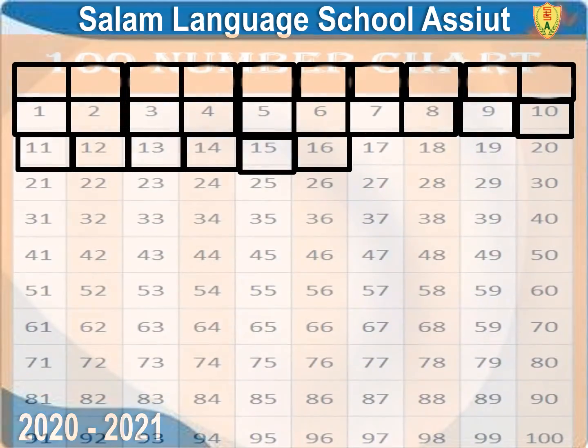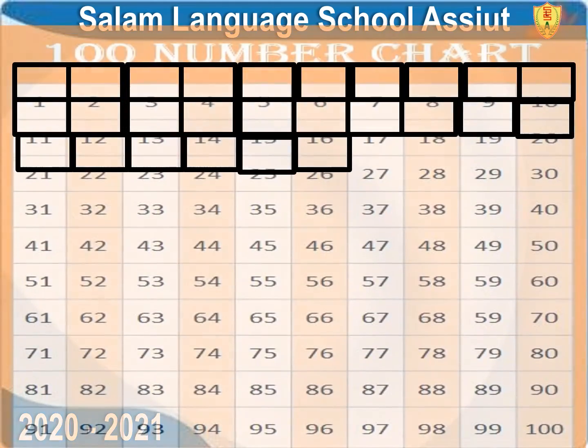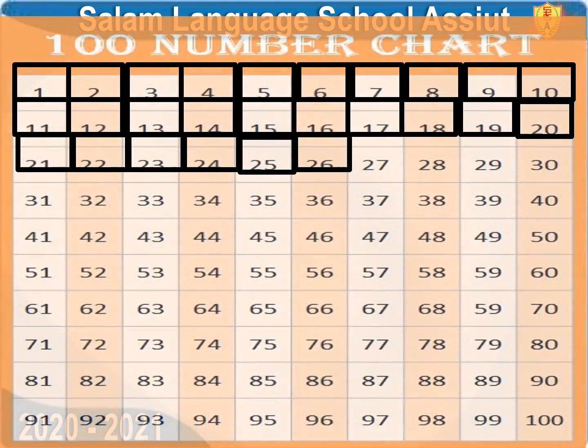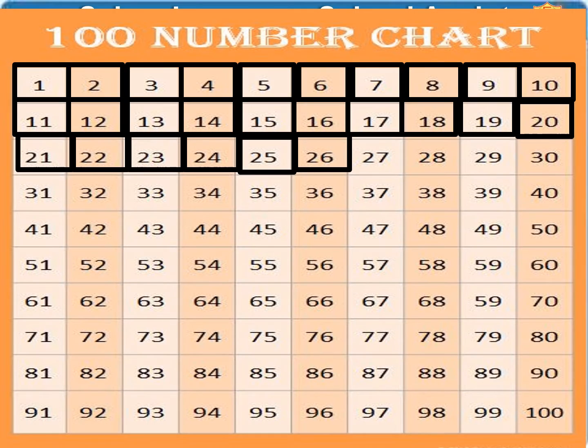Now it's number chart time. I put a square around number 27 to show how many lesson messages we have been studying.